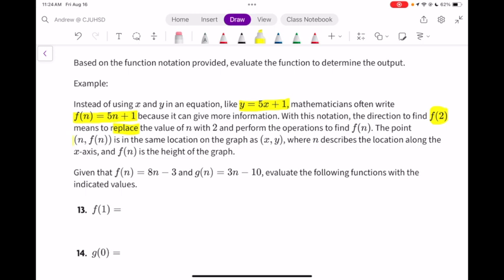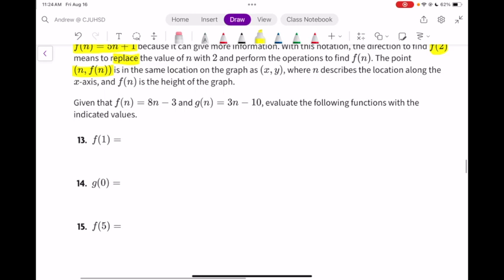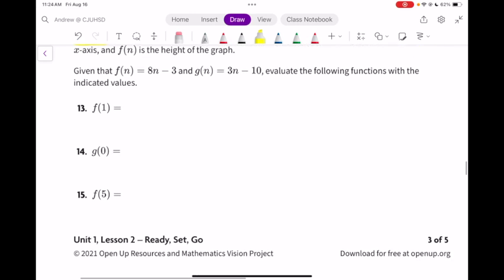The point (n, f(n)) is in the same location on the graph as (x, y), where n describes the location along the x-axis and f(n) is the height of the graph. So to see if we understand that, we're going to evaluate two different functions. One is called f and one is called g.